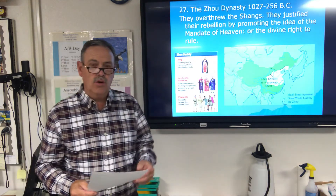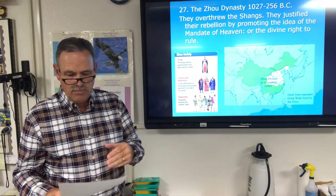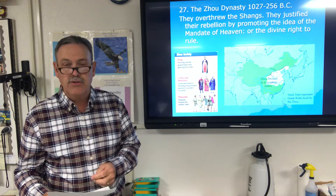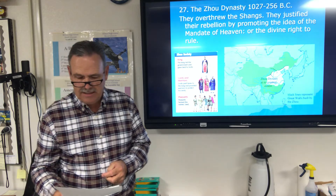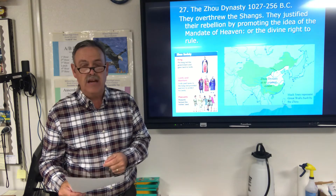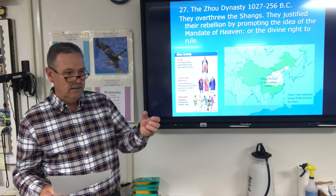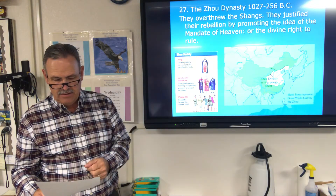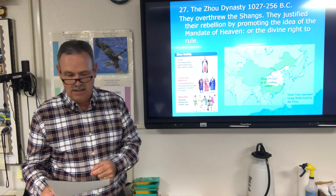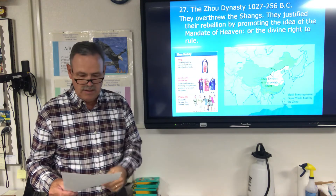The next dynasty is the Zhou, sometimes pronounced 'Chow.' The newer book dates it 1045 to 256 BC; the older book started at 1027 BC. This group overthrew the Shang and justified their rebellion by promoting the idea of the Mandate of Heaven — the divine right to rule. They believed authority to govern came from heaven, and that the cruelty of the last Shang king had so outraged the gods that ruin was sent upon them, allowing the Zhou dynasty to take over.